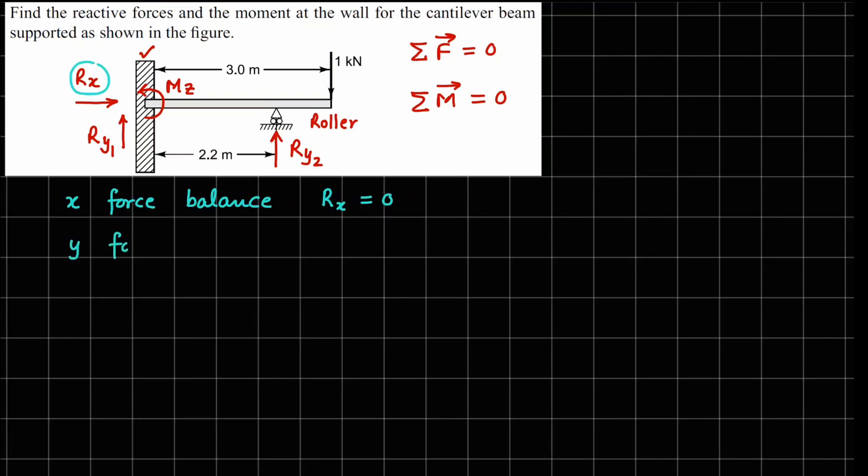Then we do this for y force balance. And how many forces we have in y direction? We have this Ry1, Ry2 and this 1 kilonewton. So Ry1 positive, Ry2 positive again has to balance the negative force, which is 1 kilonewton.